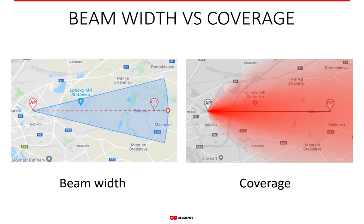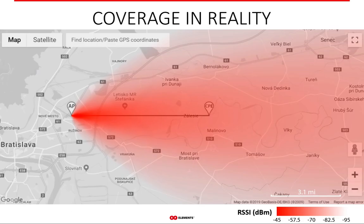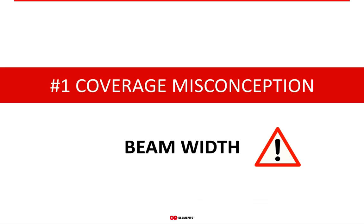These two images show the same scenario. The one on the left shows an overlay of antenna beam width on a map — the blue area does not represent coverage; it simply shows the section of the circle corresponding to the beam width angle. The image on the right, however, is the closest thing to how coverage would look if electromagnetic waves were visible. The more vibrant the red, the stronger the signal; the more faint, the weaker. The scale of signal strength is shown in the lower right corner.